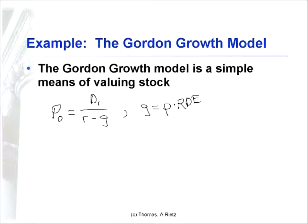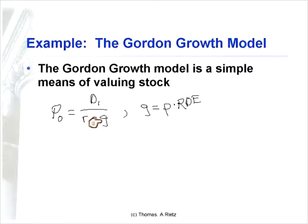With this formula you can do a variety of things. If you know the dividend, the return, and the growth rate, you can find the price. If you know the price, the dividend, and the growth rate, you can infer the return investors must be demanding. If you know the price, return, and dividend, you can infer the growth rate they must be forecasting. Alternatively, if you know the retention ratio and return on equity from the accounting statements, you can forecast growth and plug that in to find the price. Once we have this representation, it's fairly easy to see the relationships between all these variables and use a little algebra to solve for things you're interested in.